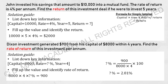Dixon's investment generated 900 from his capital of 8,000 within 4 years. Find the rate of return per annum. We have 8,000 times 4 years times unknown percent equals 900. Shift the 8,000 times 4 to the other side as division, then multiply by 100 to convert to percentage. You should get 2.8125, and rounded to 3 significant figures, that is 2.81%.